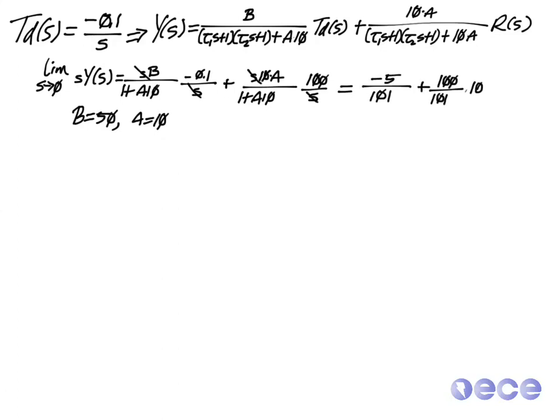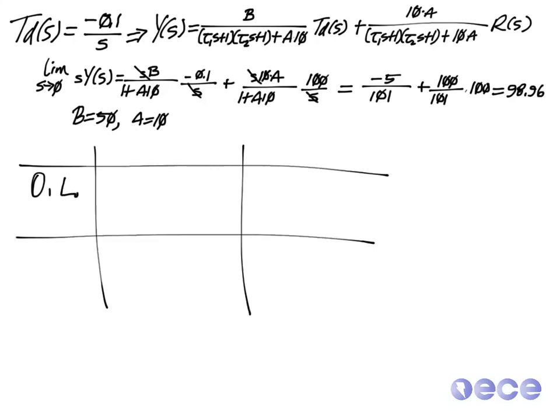We see that our final value is equal to 98.96. So in the open loop case, as you'll recall, we had a final value with the same disturbance equal to 95.